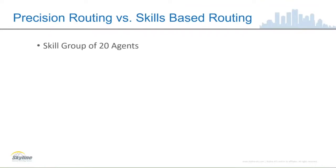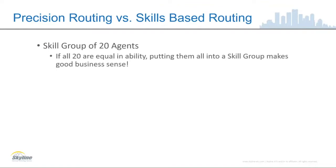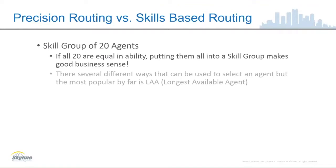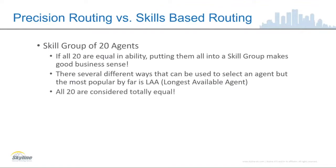Let's take an example of 20 agents. All 20 agents are in a skill group. All 20 are considered equal in ability — that's what we've always had. From a business sense, this makes a lot of sense if they truly are equal. There are also several different ways you can select an agent; by far the most popular is the longest available agent. Truly, all 20 are considered equal in this kind of scenario.